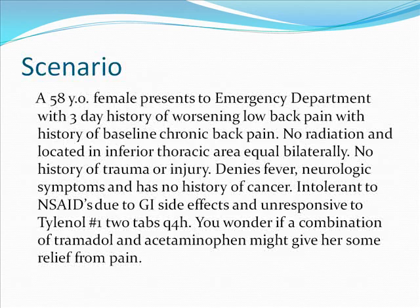Let's construct our PICO from this patient scenario. A 58-year-old woman presents to the emergency department with a three-day history of worsening low back pain with a history of baseline chronic back pain. The pain doesn't radiate and is located in the inferior thoracic area, equal bilaterally. There is no history of trauma or injury. The patient denies fever and neurologic symptoms and has no history of cancer. She is intolerant to non-steroidal anti-inflammatories due to GI side effects and is unresponsive to Tylenol-1, two tabs every four hours.